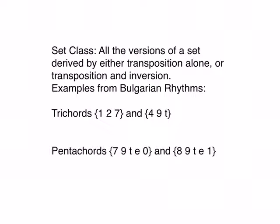For example, in the Bulgarian rhythms piece of Bela Bartok, we looked at a few trichords. We looked at the trichord that had pitches 1, 2, and 7, and in measure nine in the right hand pitches 4, 9, and 10.